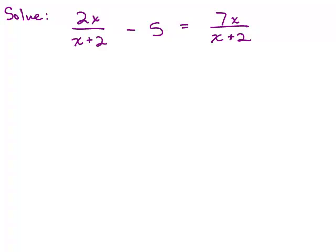Here's an example: 2x over (x+2) minus 5 equals 7x over (x+2). There are at least two ways to do this problem. One way is to simply multiply all the terms on both sides of the equation by (x+2). Another way is to make all the denominators the same and then make the numerators equal.